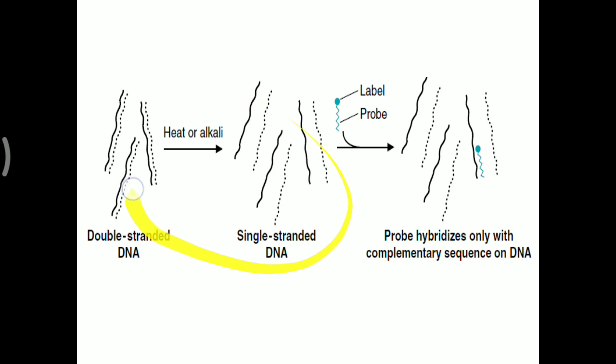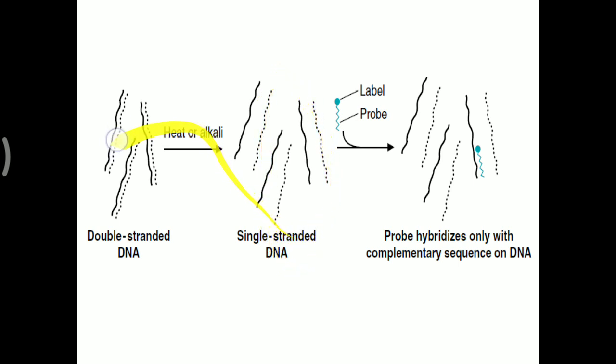How this probe works is explained in this picture. Starting with simple double-stranded DNA, to detect a particular gene, the double-stranded DNA is first converted into single-stranded DNA using heat or alkali — this is called denaturation. Once the DNA is single-stranded, the labeled probe is added, and as per the complementary base-pairing rule, the probe will hybridize only with the complementary sequence of the targeted DNA.